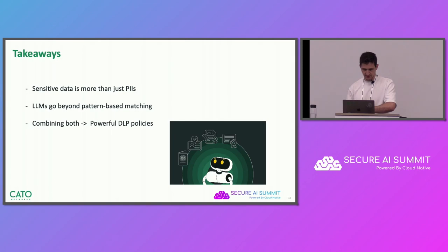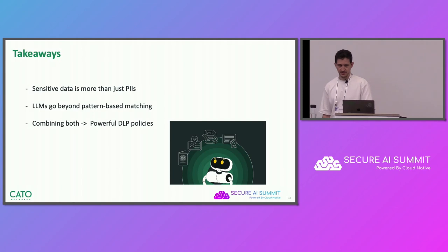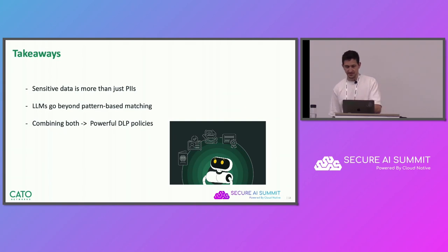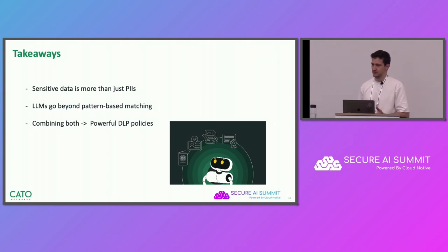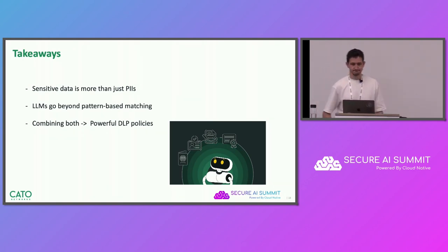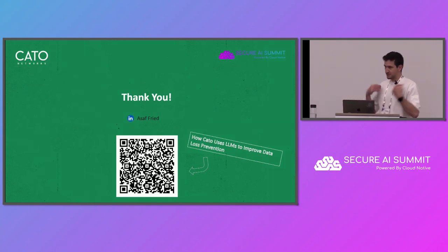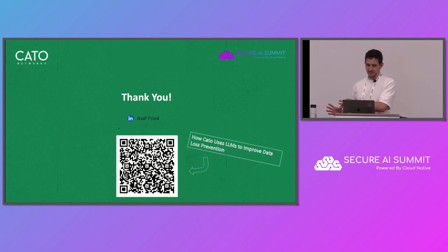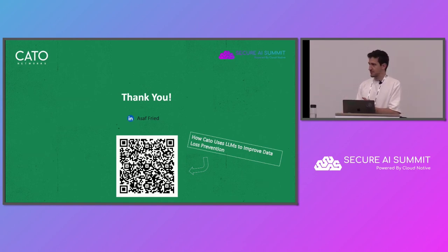Key takeaways: sensitive data is more than just PIIs. It could be document classification, it could be contextual information. LLMs really go beyond basic pattern matching to detect this sensitive data. Combining these two together is the way to create modern DLP solutions with very powerful policies and capabilities. Thank you very much for listening. If you want to read more about this research within Cato, you are welcome to scan the QR code. Let me know if you have any questions.